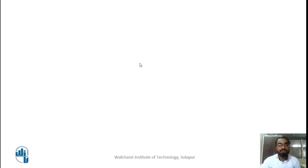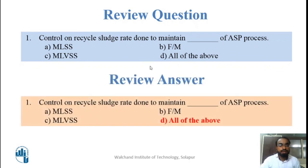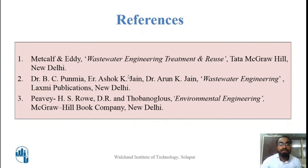Let us have a few review questions. The question is: control of recycle or sludge rate is maintained by which parameter of the ASP process — whether MLSS, F/M ratio, MLVSS, or all of the above? My answer is all of the above, because ASP mostly targets maintaining MLSS and F/M ratio, but by maintaining MLSS, the MLVSS is also controlled because MLVSS is approximately 80% of MLSS, so MLVSS / MLSS = 0.8.